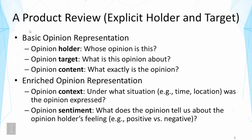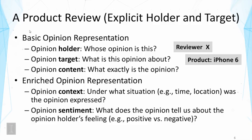Let's take a simple example of a product review. In this case, there is an explicit opinion holder and explicit target. The opinion holder is obviously the reviewer, and it's also very clear what the opinion target is — that's the product being reviewed, for example, iPhone 6. When the review was posted, you can usually extract that information easily. The content is the review text, which is also easy to obtain. So product reviews are fairly easy to analyze in terms of obtaining a basic opinion representation.